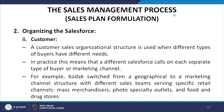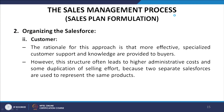A customer sales organization structure is used when different types of buyers have different needs. In practice, this means that a different sales force calls on each separate type of buyer or marketing channel. For example, Kodak switched from a geographical to a marketing channel structure with different sales teams serving specific retail channels: mass merchandisers, photo specialty outlets, and food and drug stores. The rationale is that more effective specialized customer support and knowledge are provided to buyers. However, this structure often leads to higher administrative costs and some duplication of selling efforts because two separate sales forces represent the same product.